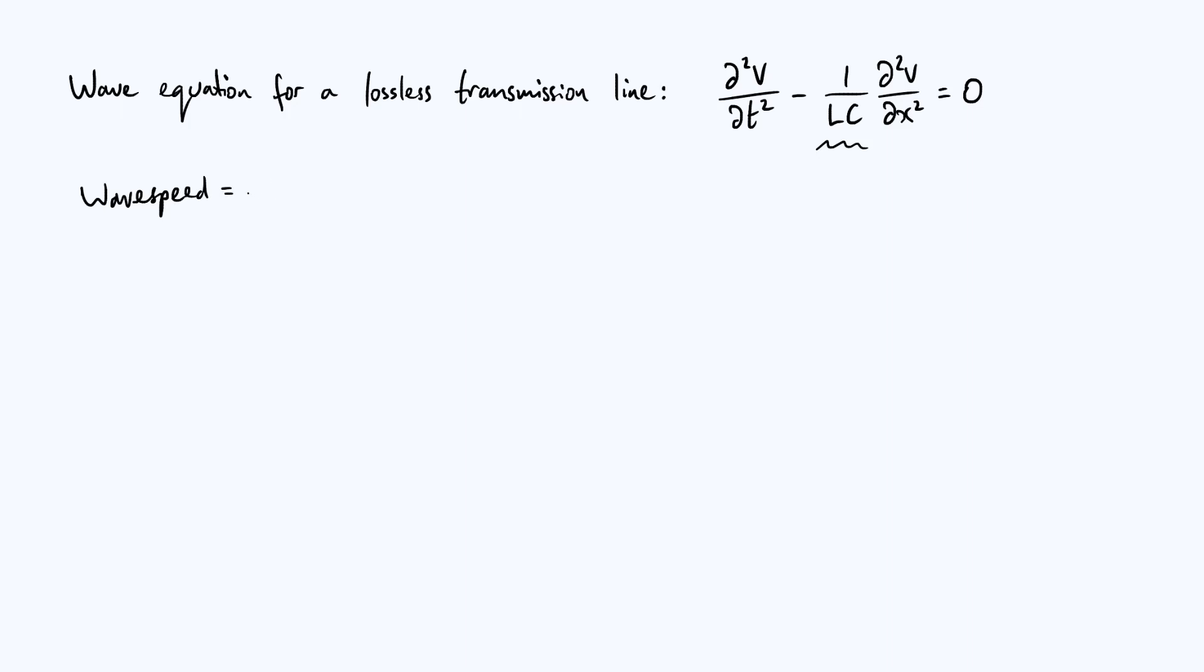The wave speed is therefore, let's give it a symbol, let's call it u, it's 1 over the square root of LC where L and C are the inductance and capacitance per unit length of the transmission line. That's fairly straightforward if you know the wave equation.